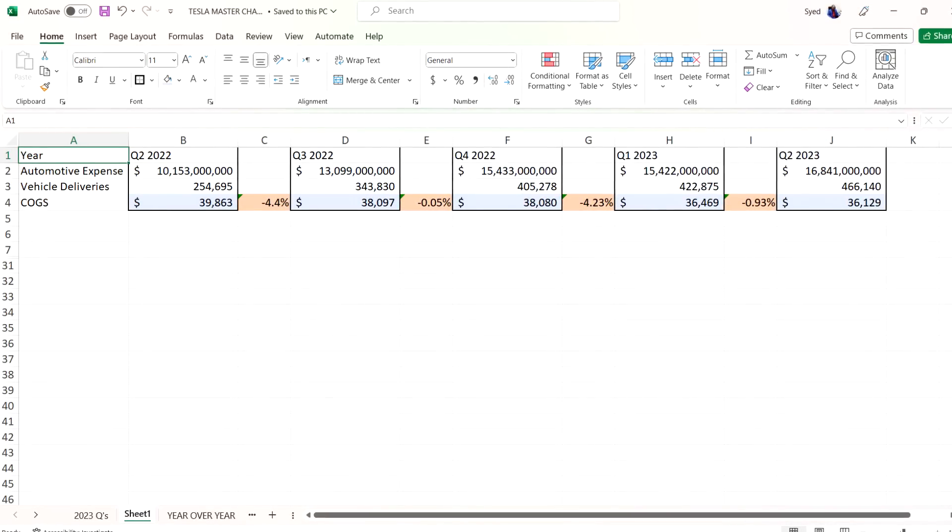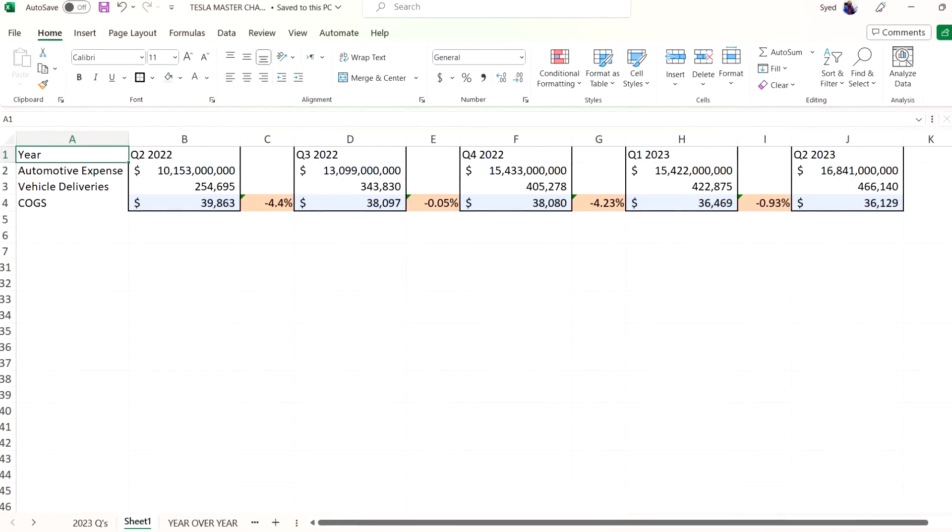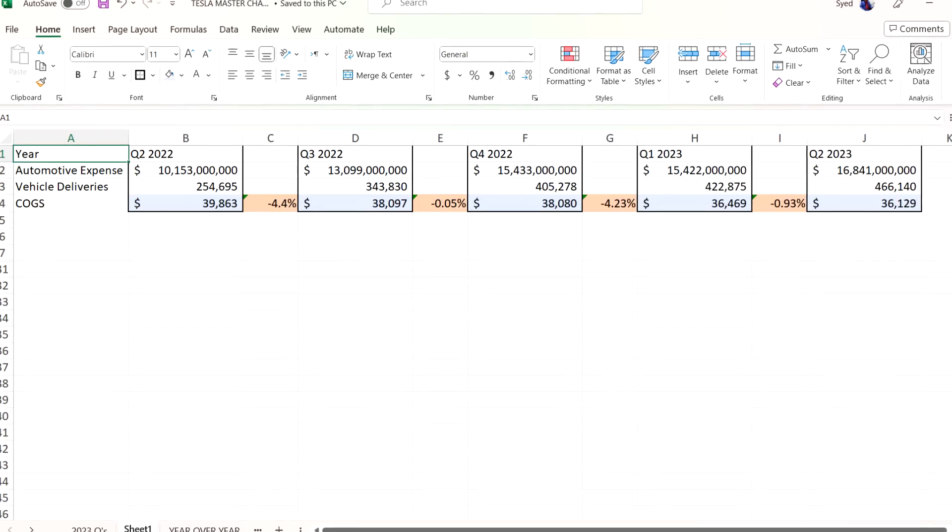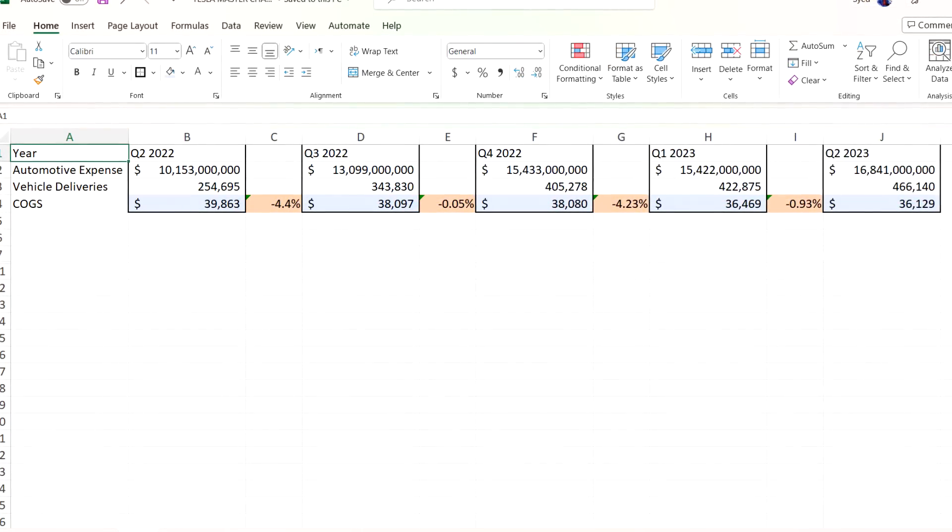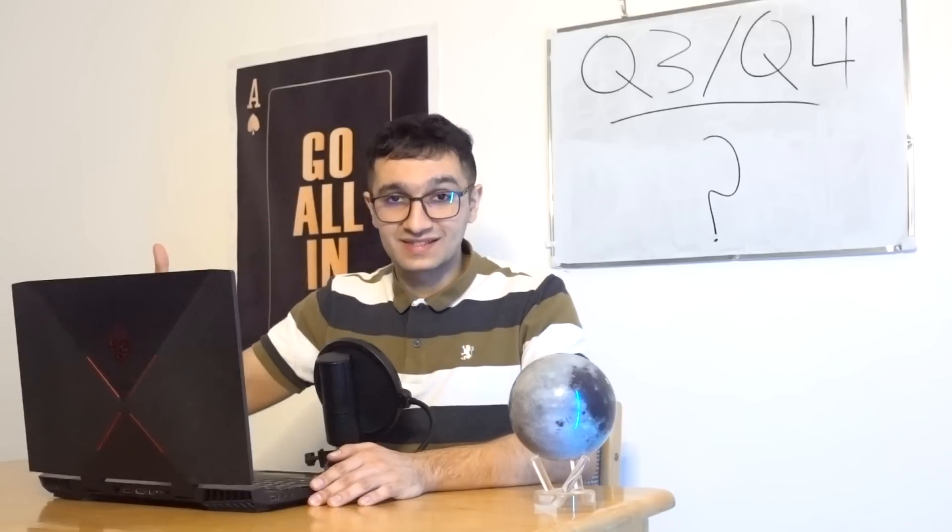This shows how much each vehicle costs Tesla to make, so anything above this is a profit. As you guys can see, in Q2 of 2022 it was almost $40,000, which is crazy. In Q3 it was $38,000, so down about almost 4.5%. In Q4 it was $38,000, not too much. But in Q1 we had over 4% to $36,500, and in Q2 recently it went down almost a percent to $36,000. Most likely in Q3 it's going to be $35,000, and Q4 it's probably going to be low $35,000, or actually going as low as $34,000 with a huge ramp up and economy of scale with Berlin and Austin.